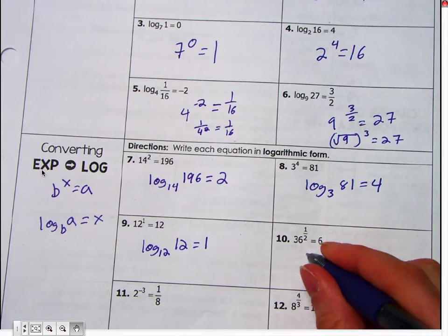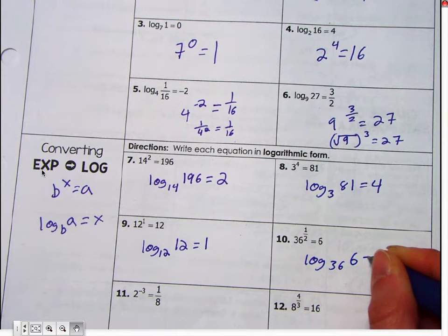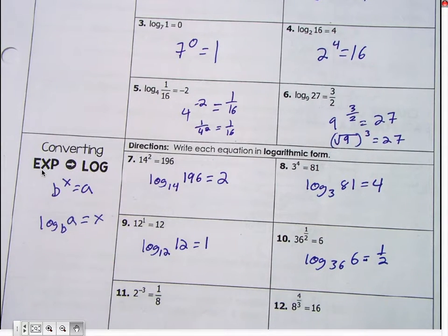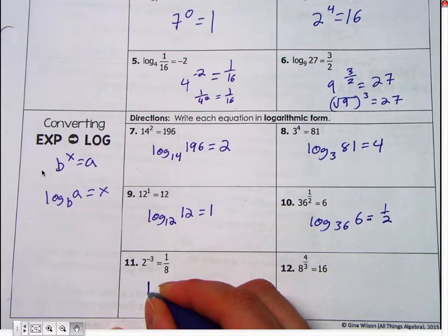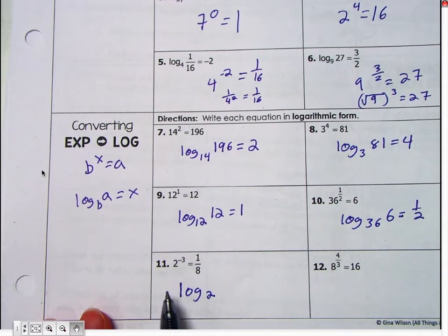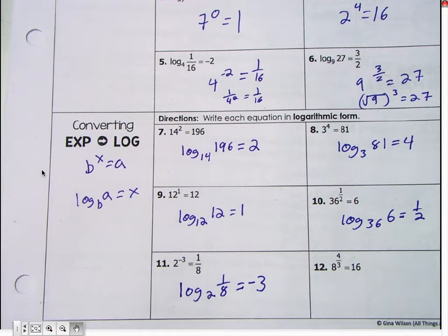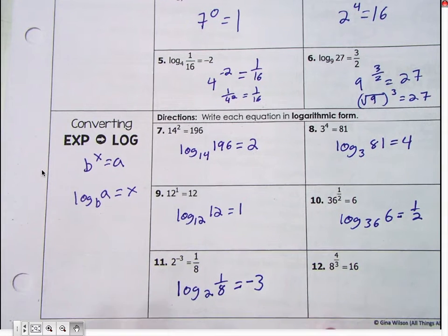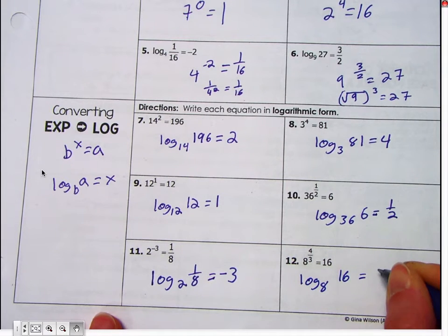Cheyenne? Mm-hmm. Of equals. Okay. Eleven? You want to try it, Nolan? Okay. Ready? Go. Log. Mm-hmm. Yep. Two to the minus three. So look, we put the b as the base. So which one's a? One-eighth equals. Okay. Last one. Log eight of sixteen equals. Good.